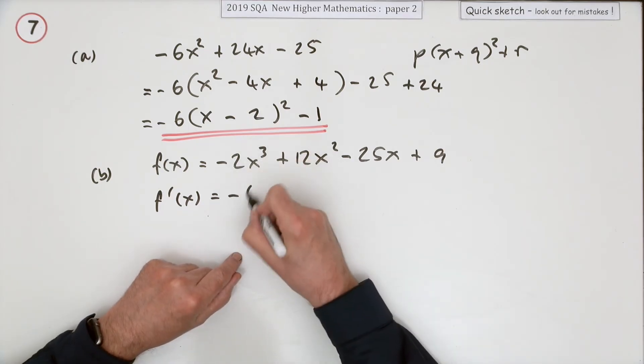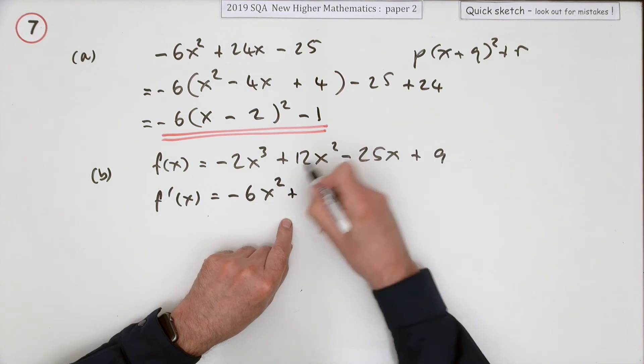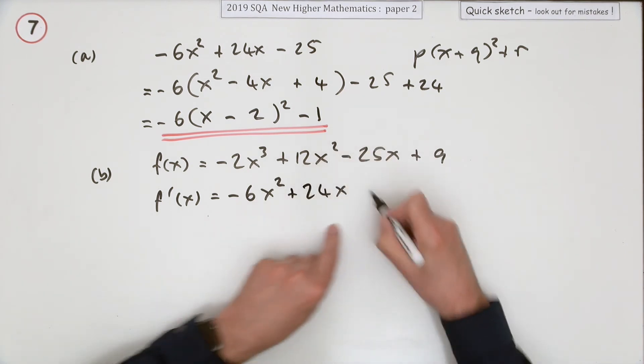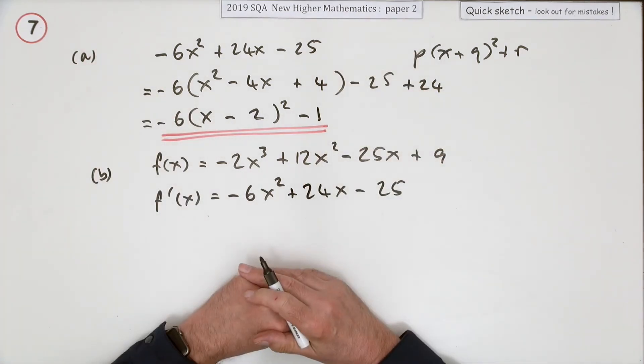Differentiate: multiply by the power negative 6, take 1 off the power. Multiply by the power 24, take 1 off the power, and that's just minus 25. So f'(x) = -6x^2 + 24x - 25.